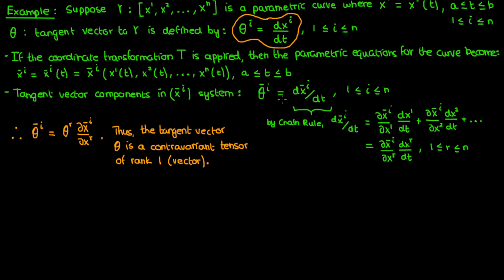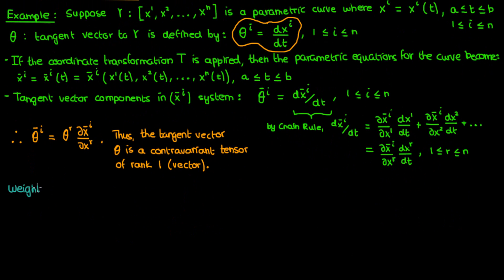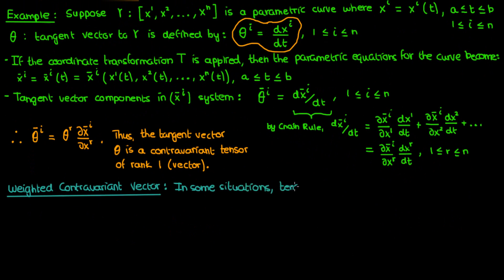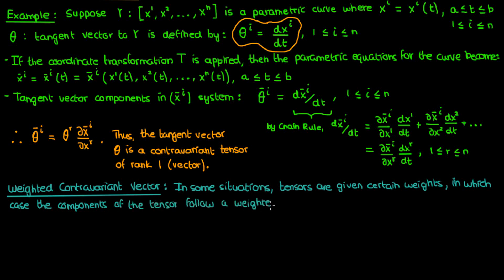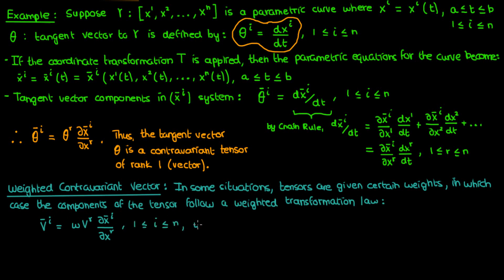Before we get to covariant vectors, let me quickly define a weighted contravariant vector, which is a variation on the regular contravariant vector. In some situations, tensors are given certain weights, and instead of a regular contravariant transformation law, the components of the tensor follow a weighted transformation law given by v super i bar equals w times v super r times the partial derivative of xi bar with respect to xr, where w is a real-valued function denoting the weight of the tensor.